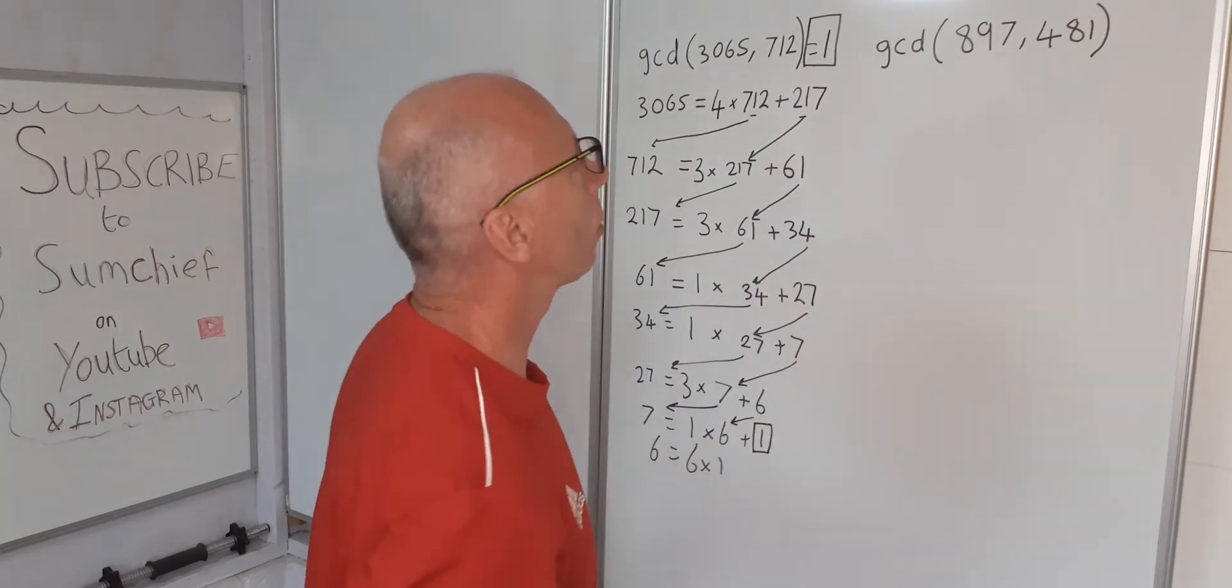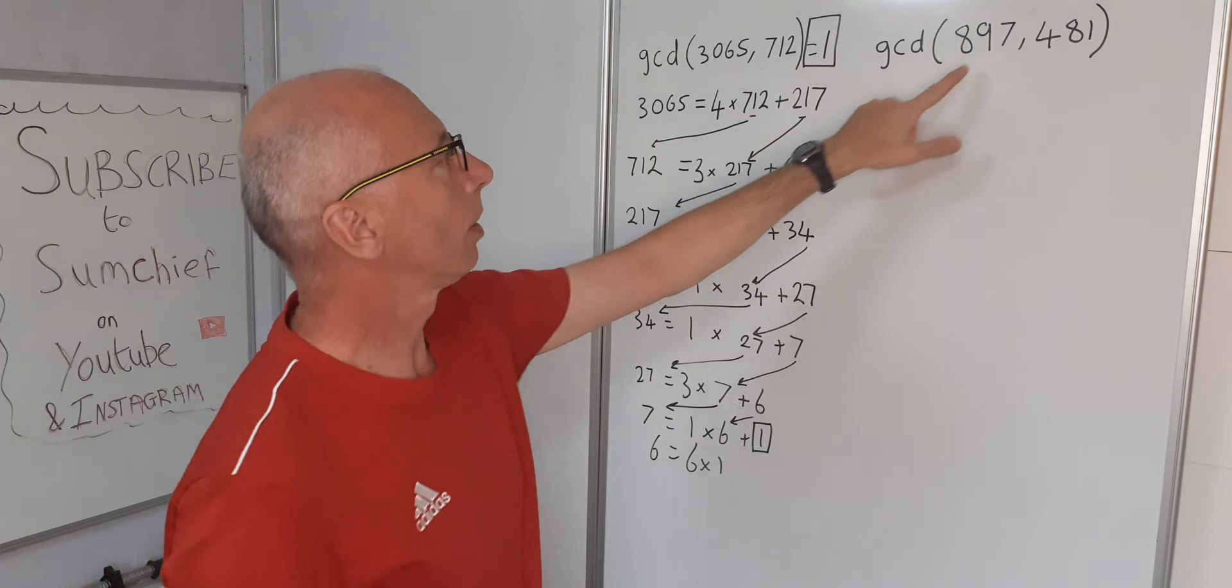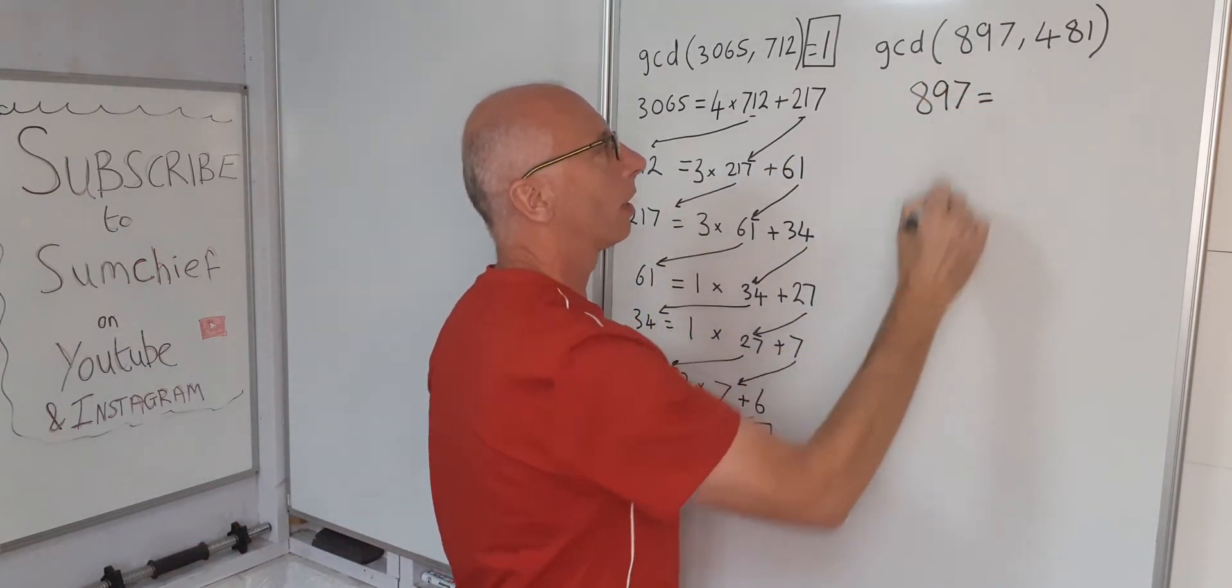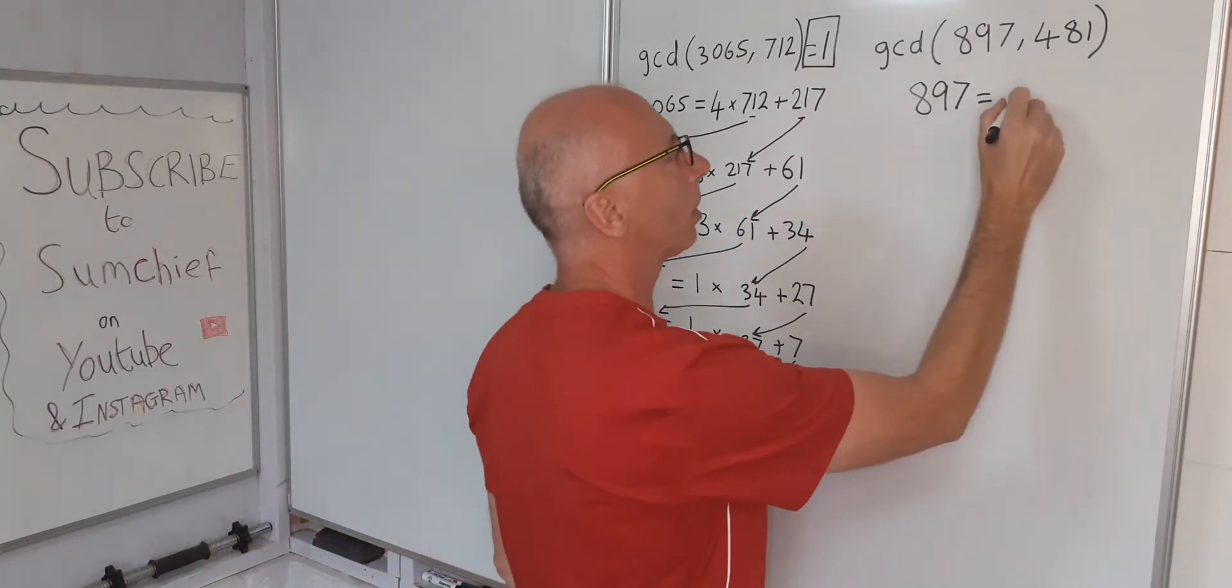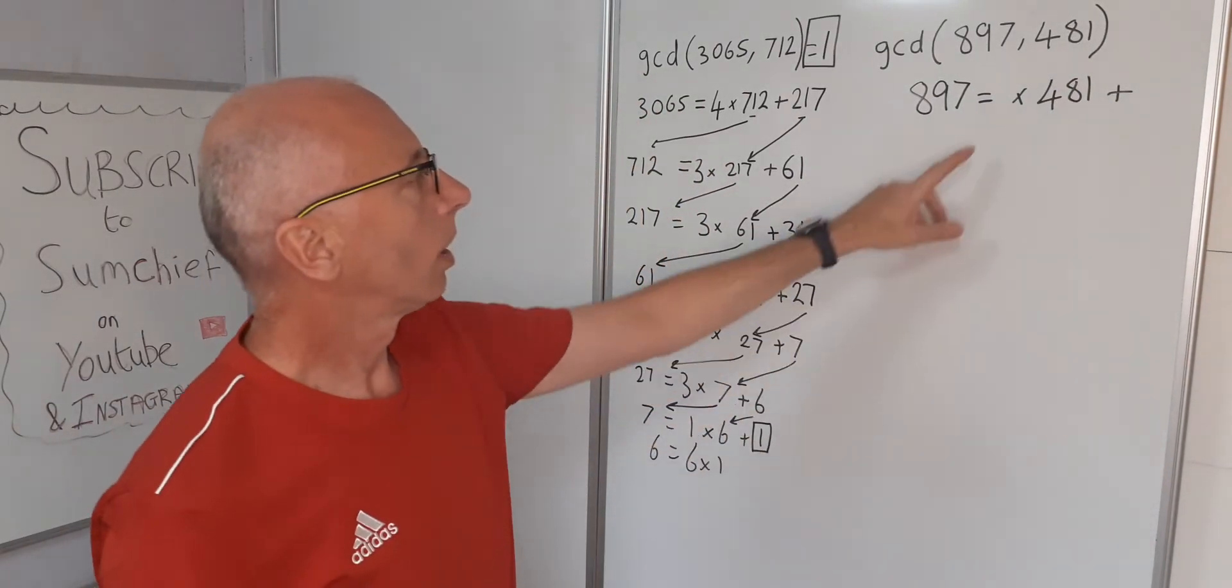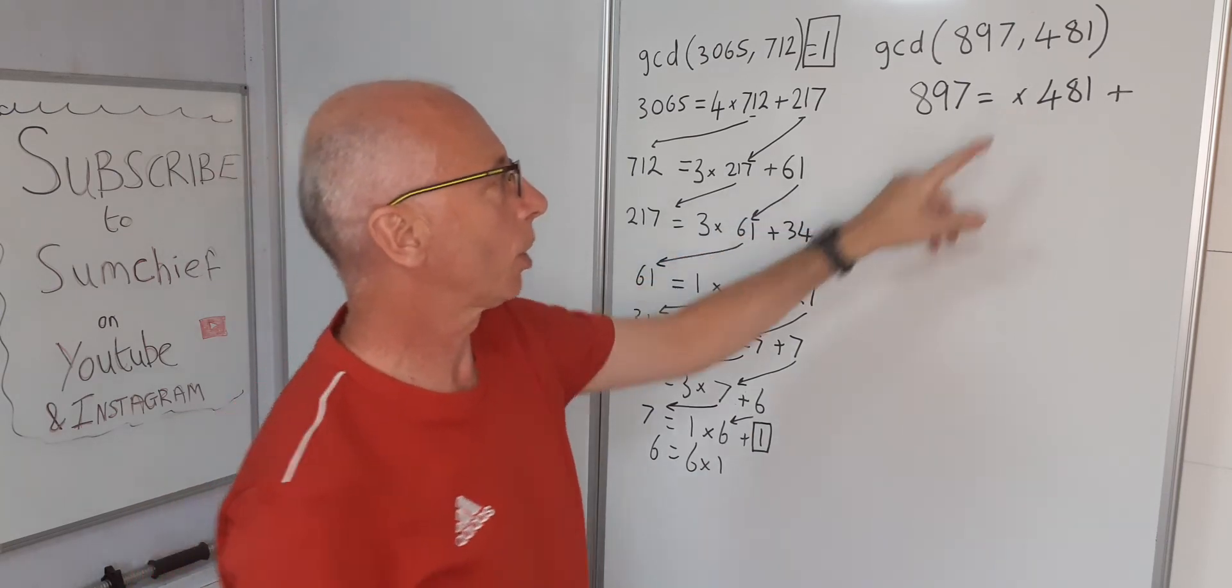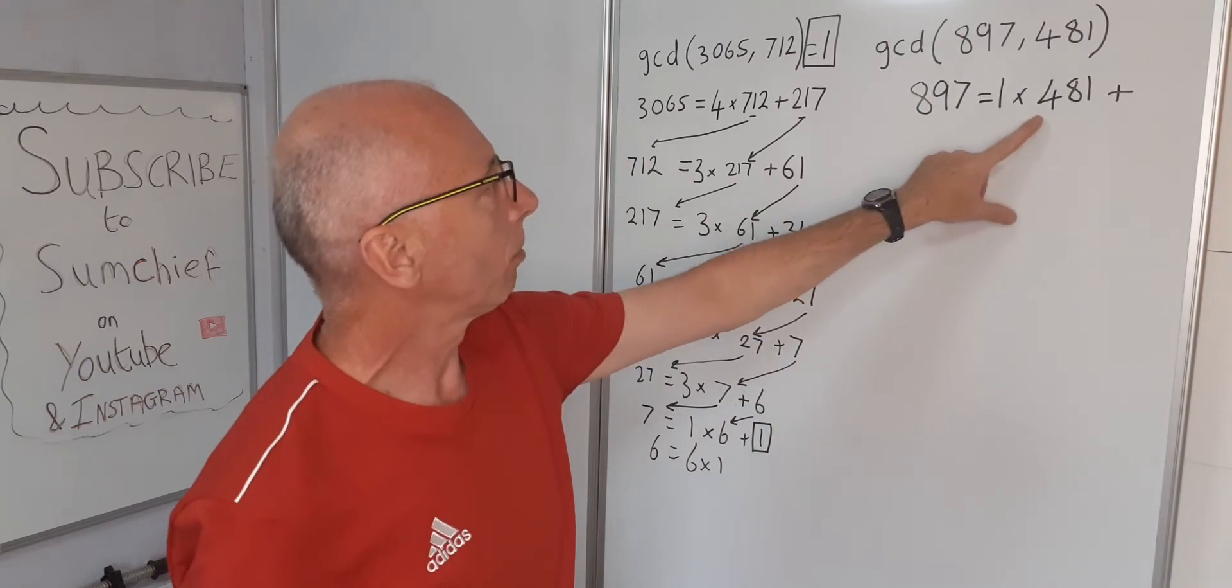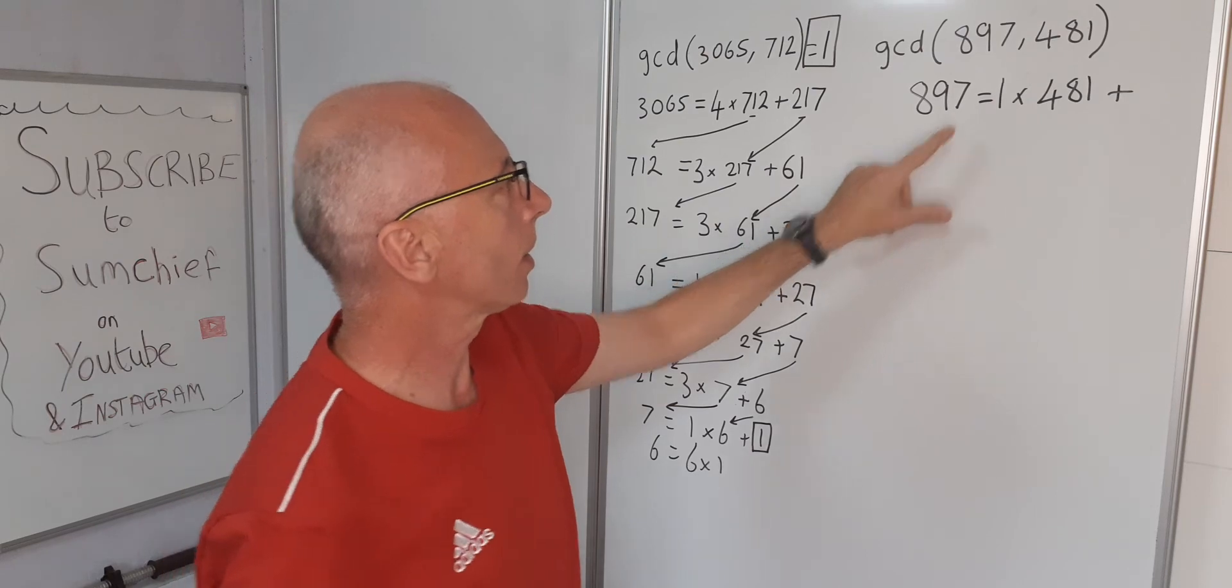Okay. 897 and 481. Again following the system we set up, pick the largest number: 897. That equals something times 481 plus a remainder. Well 481 times 2 is 962, so it's going to be 1. That's going to leave us with quite a big remainder, 897 with 481 taken off it is 416.